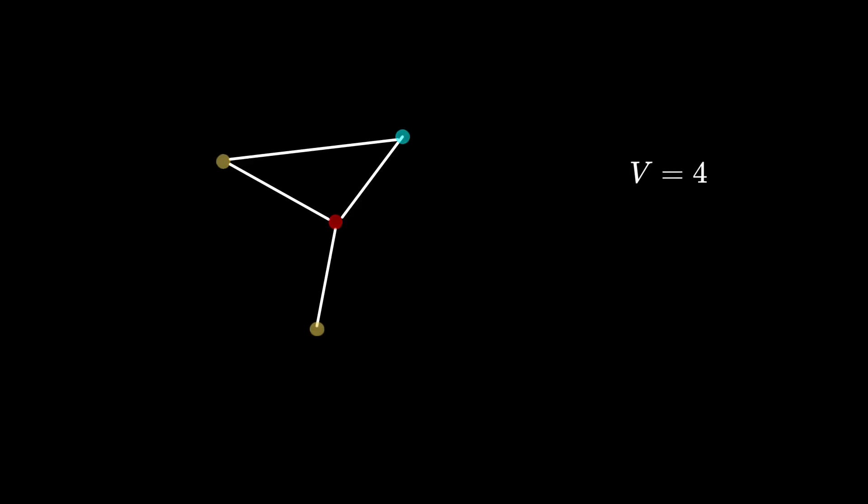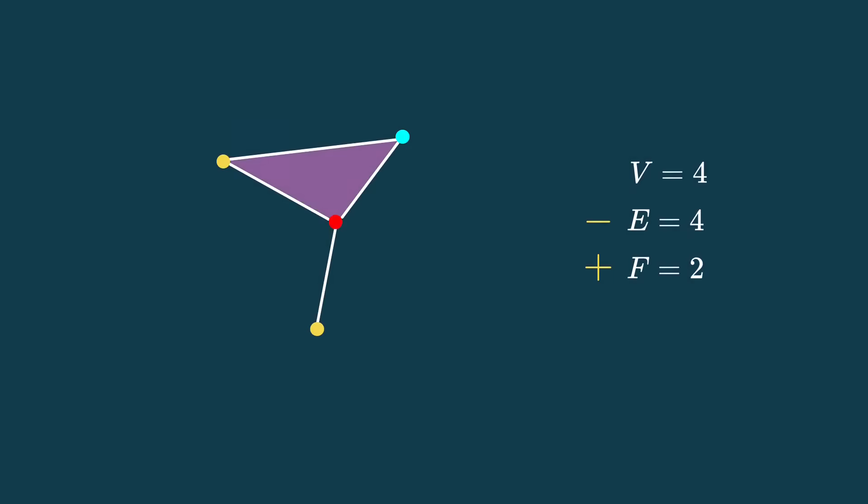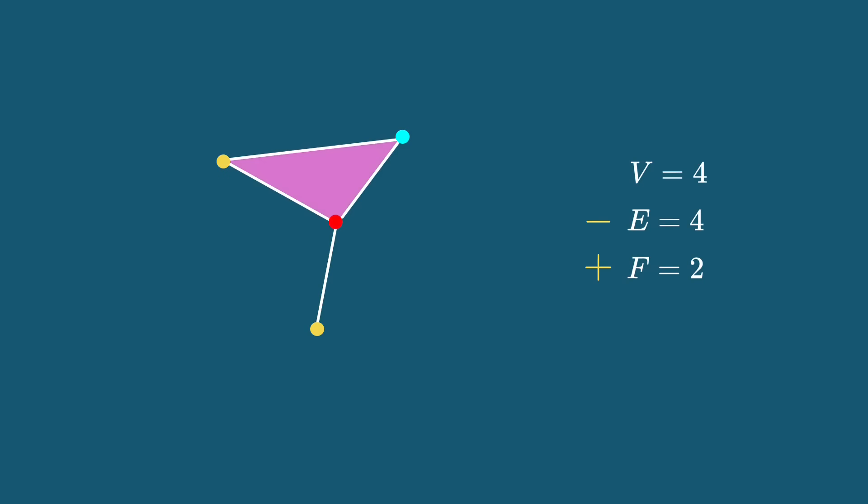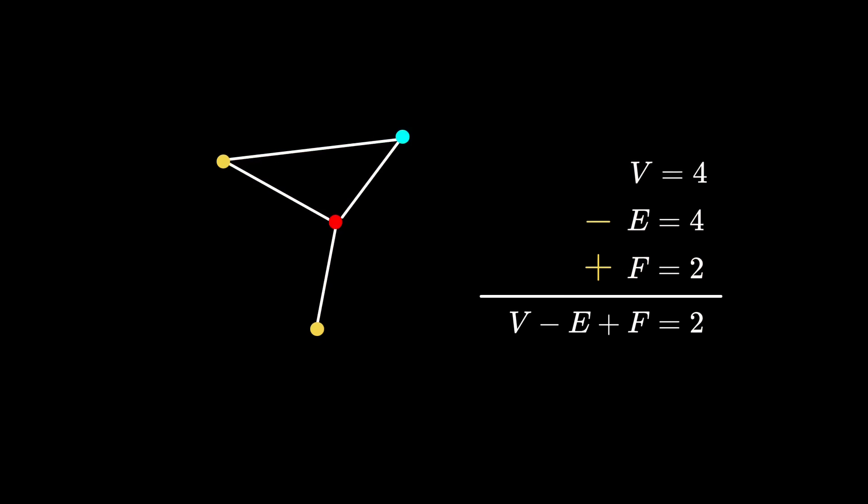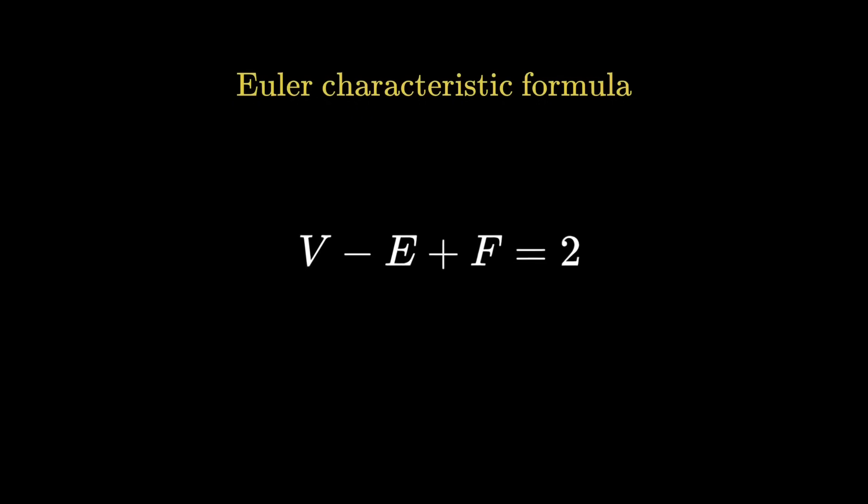The number of vertices, V, minus the number of edges, E, plus the number of faces, F, has to equal 2, no matter what graph it is. This is known as the Euler characteristic formula.